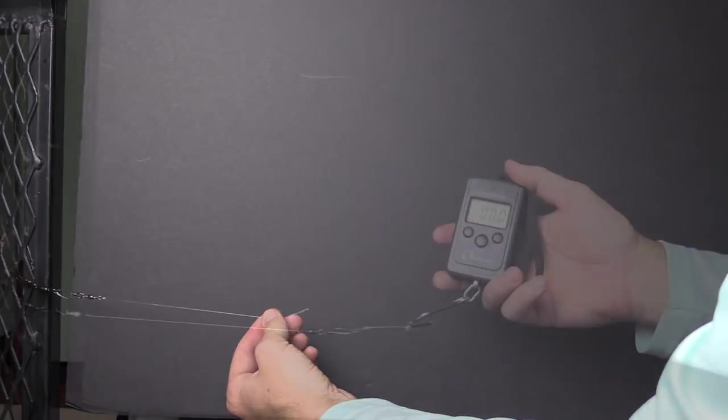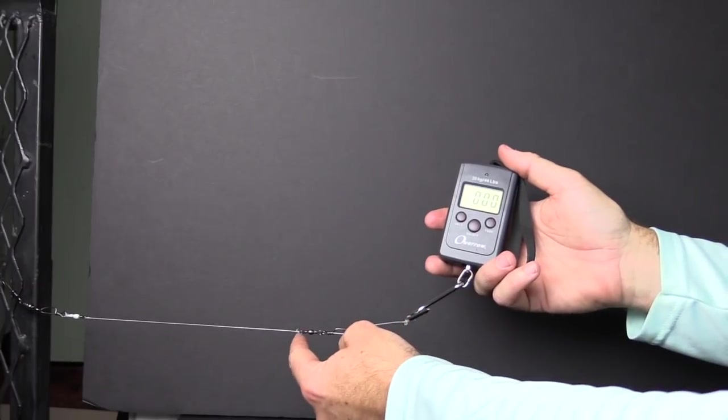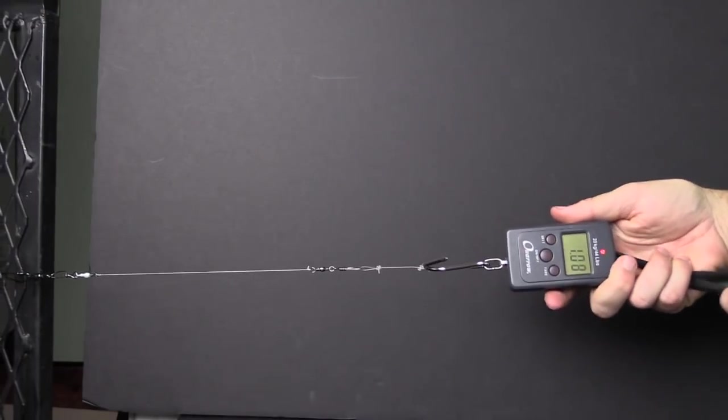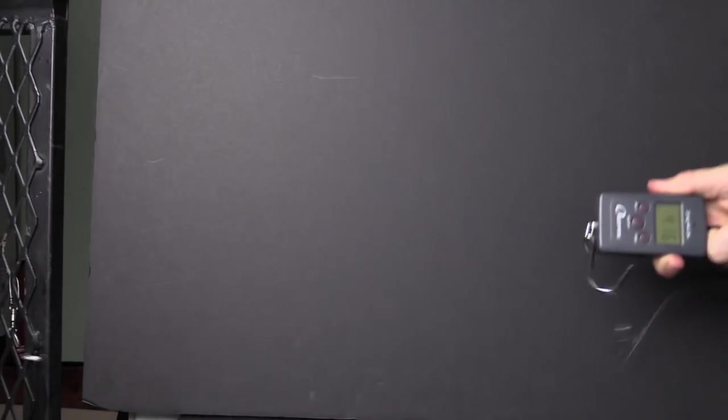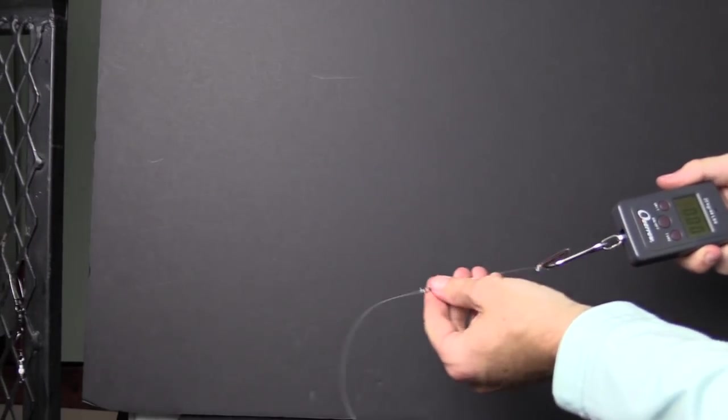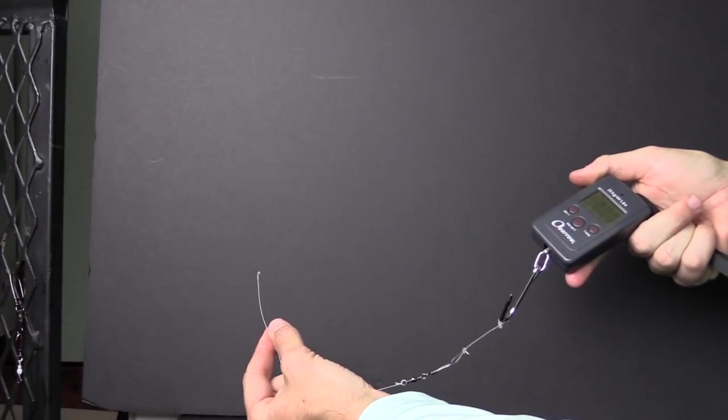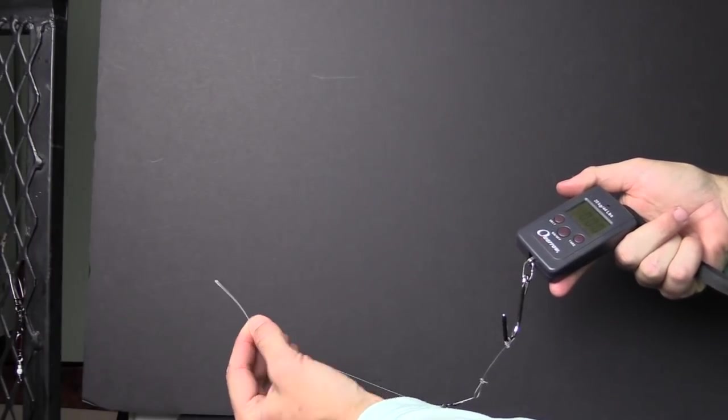Now for braid, we have the clinch knot near side, uni knot far side. Scale is zeroed, this is 20 pound braid. That actually failed before I even got pressure on it - I think that was just like five pounds, it was hardly anything, and the clinch knot is what unraveled.